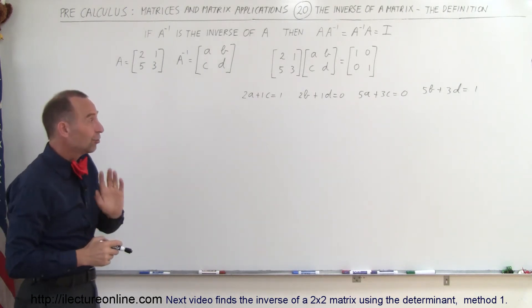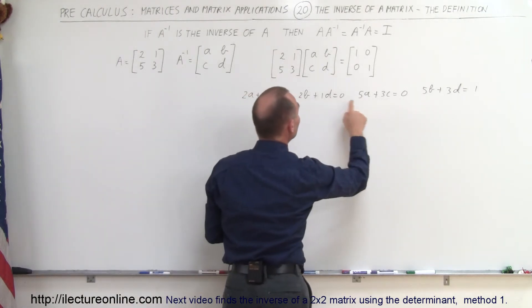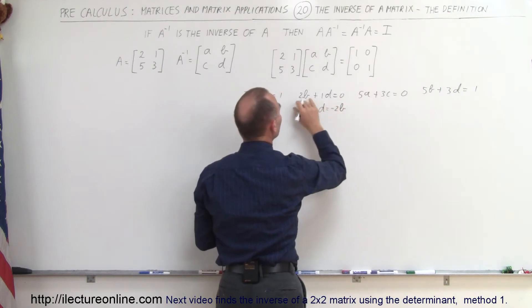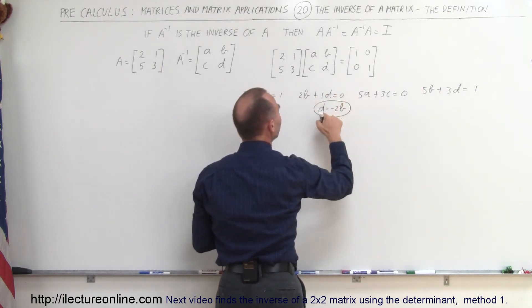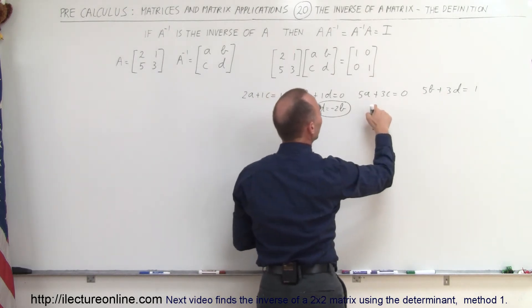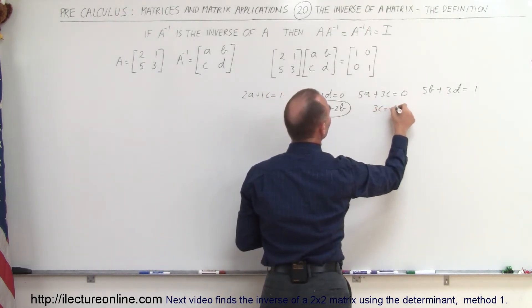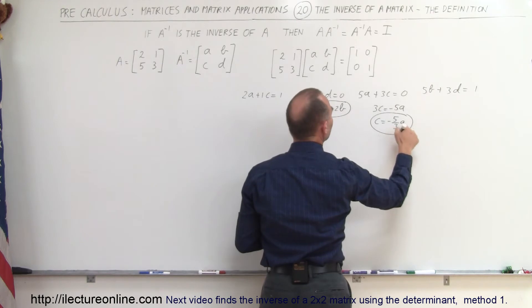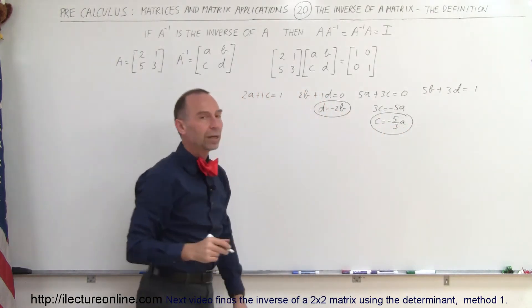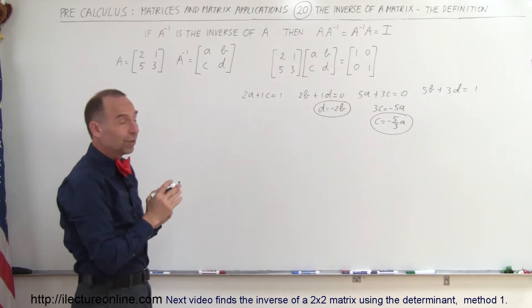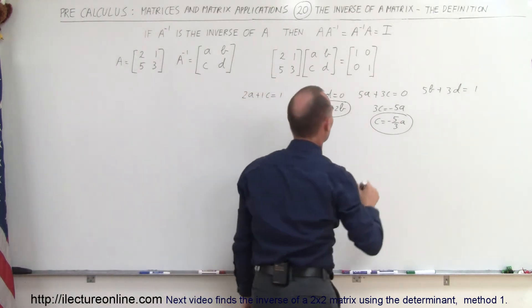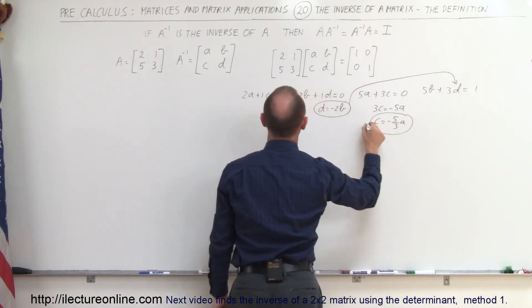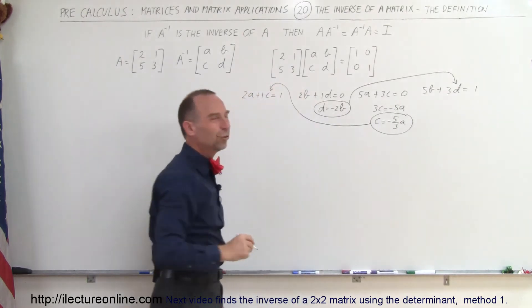It's not really as bad as you think because two of the equations are set equal to 0. In this case we can write that D is equal to minus 2B — when we move the 2B across it becomes minus 2B. So now we have D and B related to one another. And here we can write that 3C equals minus 5A, or C equals minus 5 over 3 times A. So now we have a relationship between A and C, and a relationship between B and D. We can now plug those two relationships into the other two equations to solve for the variables.